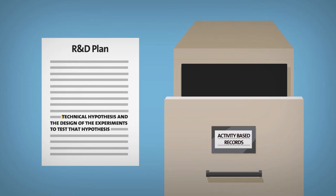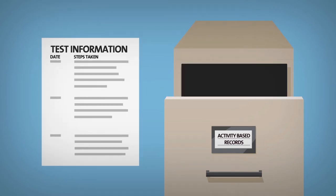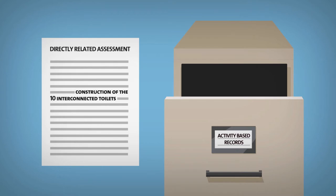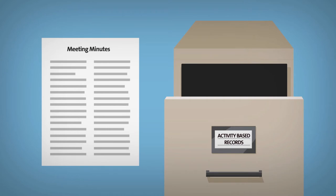An R&D plan that set out the technical hypothesis and the design of the experiments to test that hypothesis. Dates of testing and the steps that were taken as part of those tests. The data and results of the tests. How construction of the 10 interconnected toilets was directly related to the experiments. Minutes of project meetings.